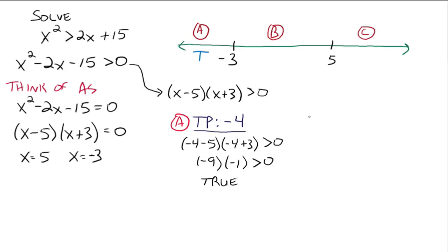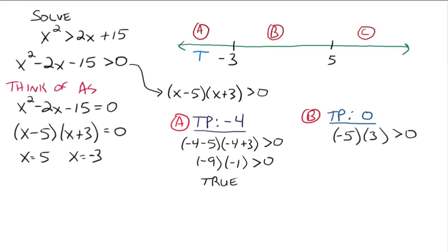Then we go to region B. A good test point there is 0. Plugging 0 in for x: 0 minus 5 times 0 plus 3 gives negative 5 times 3, which is negative 15 greater than 0. Is that a true or false statement? That's false, because negative 15 is not greater than 0. So we mark region B as false.